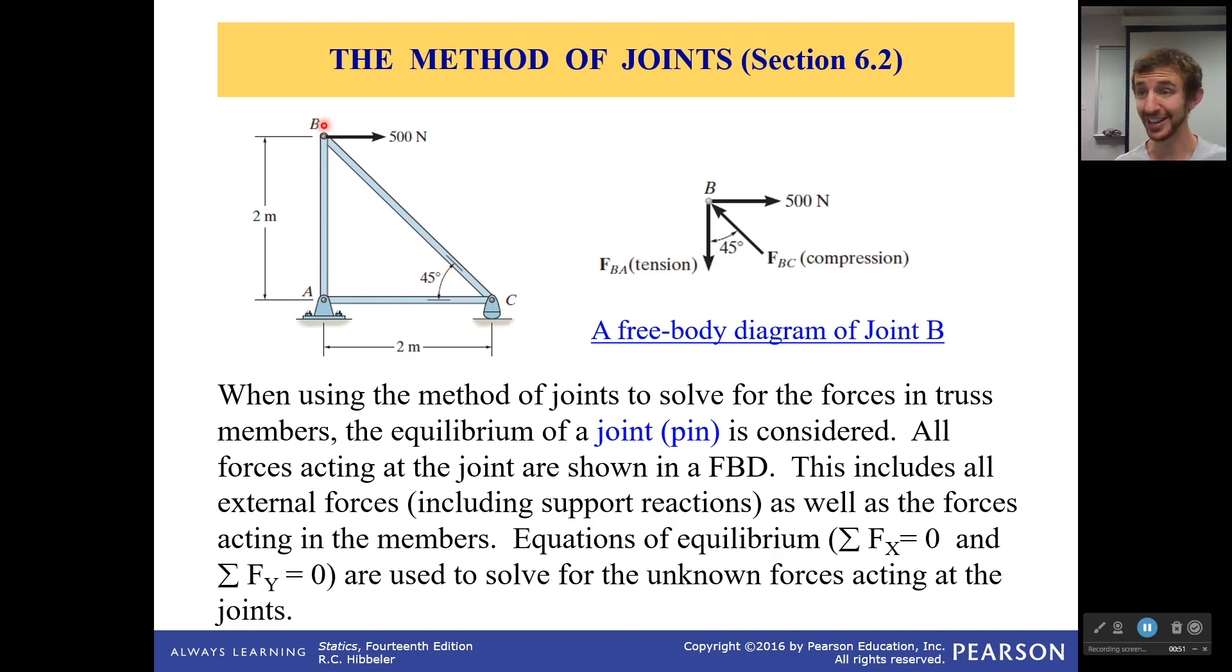Which means you can have a free body diagram for each of the joints. You go to the joint, you make one right here, right here, and right here. Now these are free body diagrams that are just at points, which means we don't get our sum of the moment equations. But we still get our sum of the forces equations. You get three equations per joint to solve, which is usually enough.